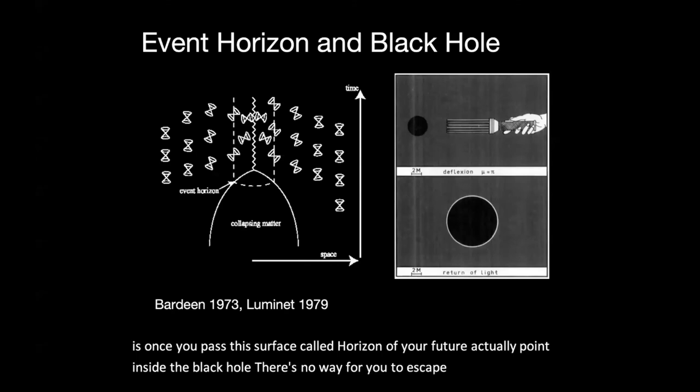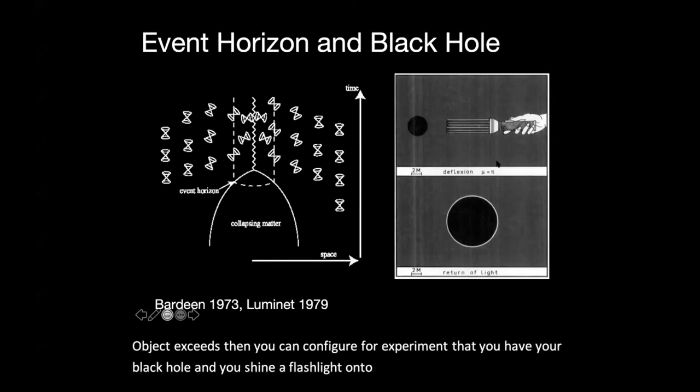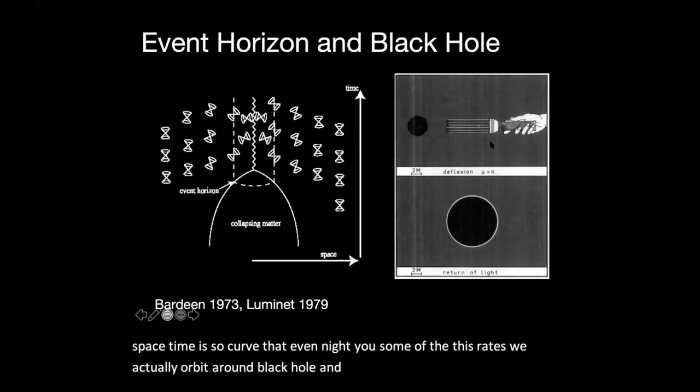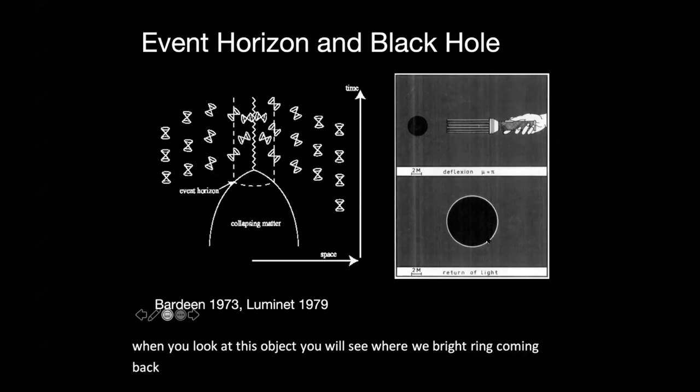And if such an object exists, then you can consider a thought experiment. Then you have this black hole, and you shine a flashlight onto it. And if you do that, because the space-time is so curved, that even light, some of these rays will actually orbit around black hole, and some of them will go back to you. So when you look at this object, you will see a very bright ring coming back. So this is the observation signature that many of us astronomers want to capture.